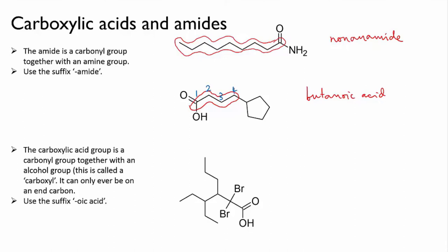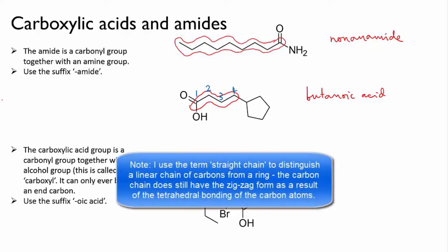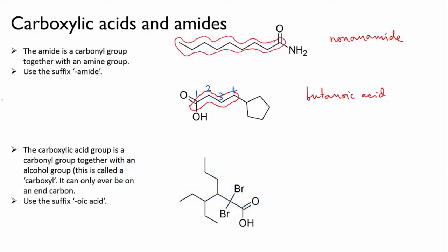Now what about the ring? Well, we just treat it as a substituent because it's attached to the end carbon of the main chain. Note that this ring, with five carbons, is actually longer than the four-carbon straight chain that we've called the main chain, but it is the straight chain that's designated the main chain because it includes the functional group. So our five-carbon ring is cyclopentane, but since it's a substituent, we'll call it cyclopentyl, and it's attached to carbon number four, numbering from the end with the functional group. So the complete name is 4-cyclopentyl butanoic acid.